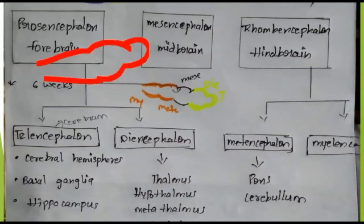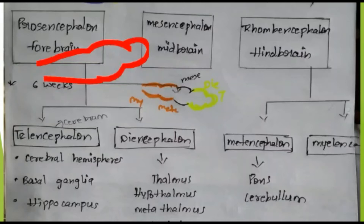When the baby develops further, at 6 weeks we can see: telencephalon, diencephalon, mesencephalon, metencephalon, and myelencephalon. You can understand that at 3 weeks we see 3 regions, but at 6 weeks you can see 5 regions.